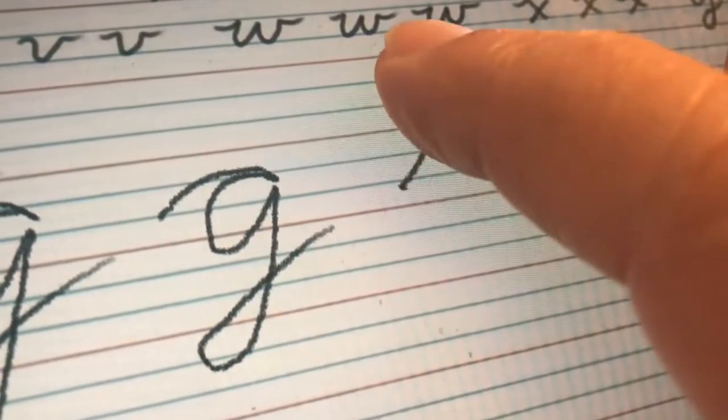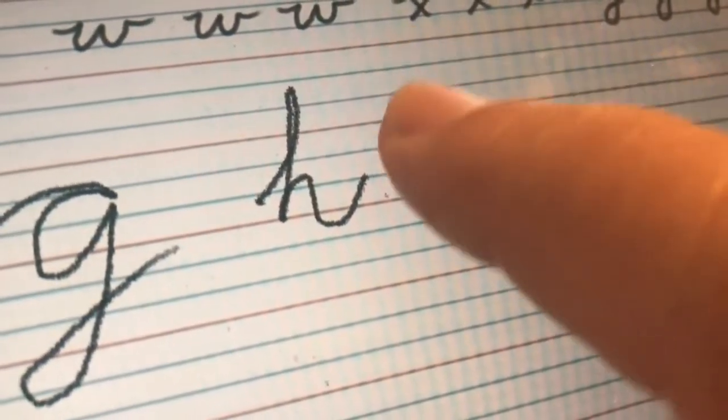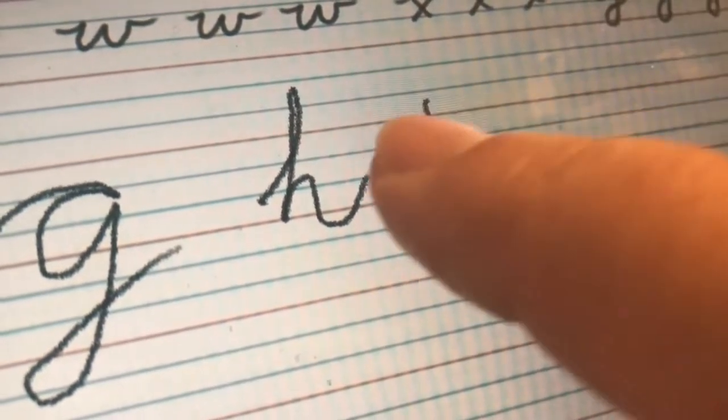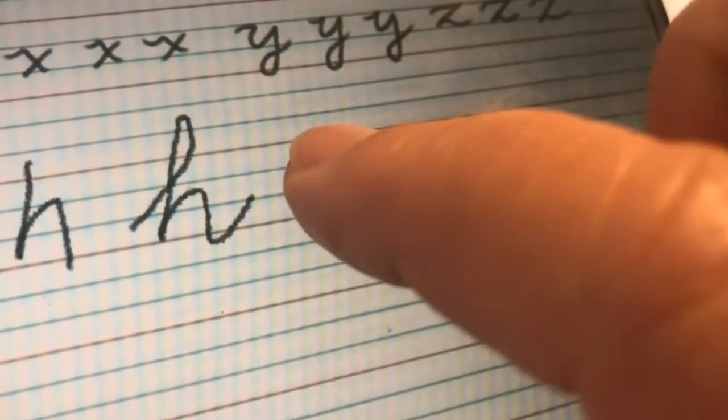H. So it's like the printing H, but we add a curl at the beginning and a kick at the end. So here we go. Curl, down, and the kick. H. I'll do one more because it is a bit tricky getting that curl.